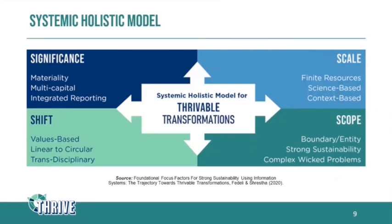One of the key offerings from Thrive is what we call the systemic holistic model, which is made up of four quadrants: significance, scale, scope, and shift. We look at the significance of the impacts we're making, the scale at which they're being made, and the scope captured by these impacts. Our view is to map the trajectory from where we are now to where we need to go — that forward guidance is what the 'shift' represents.